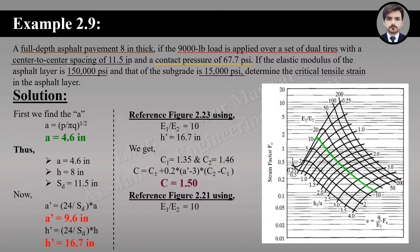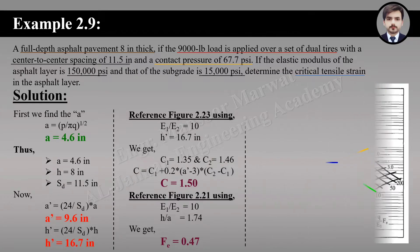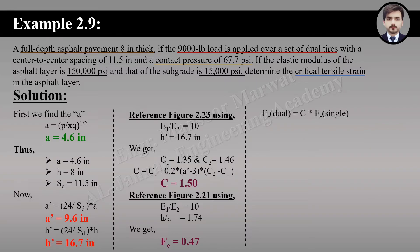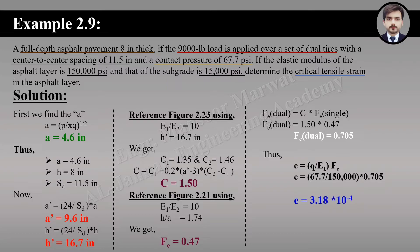Now we find the strain factor for a single wheel using reference figure 2.21, with modulus ratio equal to 10 and thickness-to-radius ratio equal to 1.74. The strain factor for single wheel is 0.47. Multiplying the single wheel strain factor by conversion factor C gives the strain factor for dual wheel equal to 0.705.